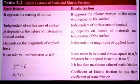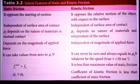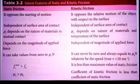Fourth point: static friction depends on the magnitude of the applied force — when a force is applied to move the object, static friction takes place. Kinetic friction, however, is independent of the magnitude of the applied force, because the object is already moving. Fifth point: static friction can take values from 0 to μs × N, which is the limit of static friction. Therefore, static friction is always greater than kinetic friction, meaning μs is greater than μk.